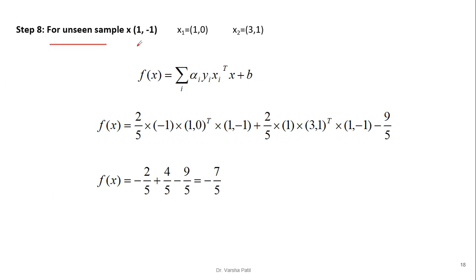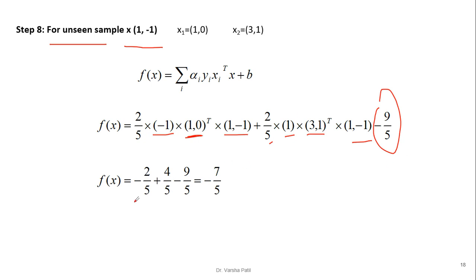Now we classify unseen samples. For an unknown sample, the decision function is: sign(Σ alpha_i * y_i * (x_i · x) + b). For sample x = (1, -1): using alpha = 2/5, the first term uses y_1 = -1, x_1 = (1, 0); the second uses y_2 = +1, x_2 = (3, 1); and bias b = -9/5. After calculation, the result is -7/5. Since the answer is negative and the first class label is also negative, this sample belongs to class minus 1.